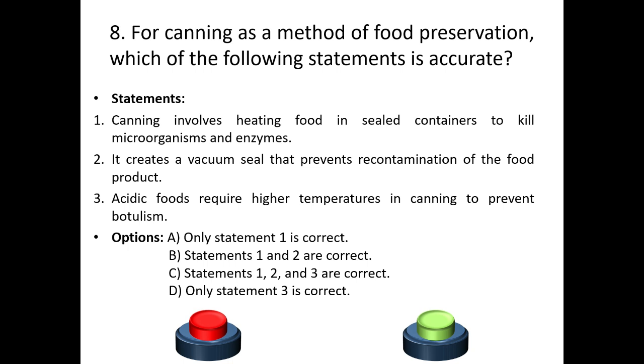The answer is B: statements one and two are correct. Statement three — acid foods require higher temperature in canning to prevent botulism — is not correct in this context.